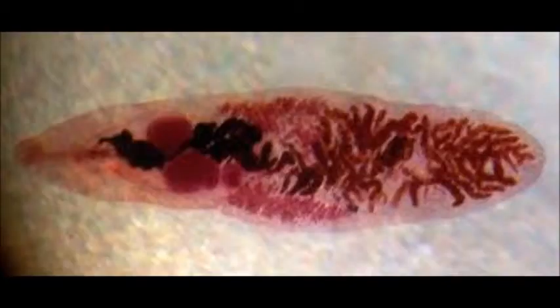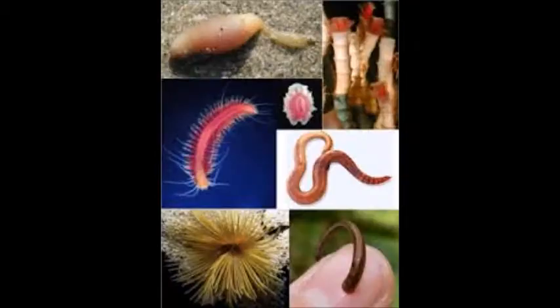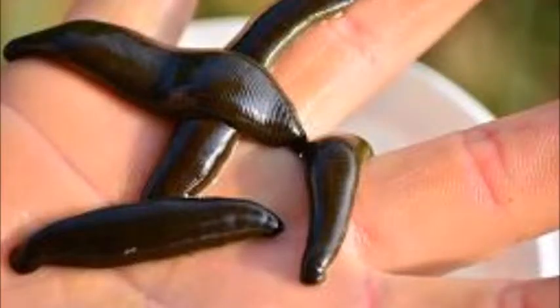Their digestive systems form, with mouths ending up coming first. Next we have Annelida. This phyla consists of only segmented worms. The organisms in this phyla are bilaterally symmetrical. Segmented worms also contain tissues. Fortunately for these creatures, their anus ended up coming first — they don't have to eat and expel waste through the same opening.